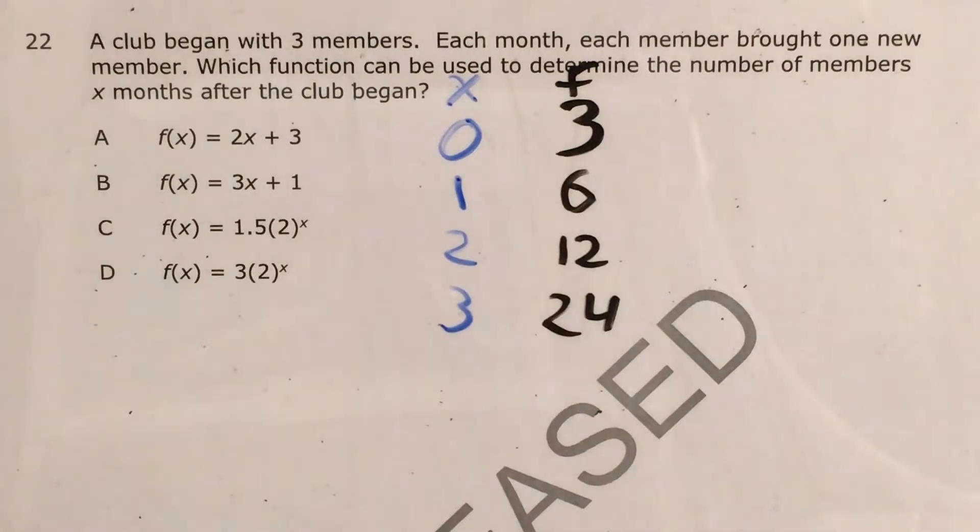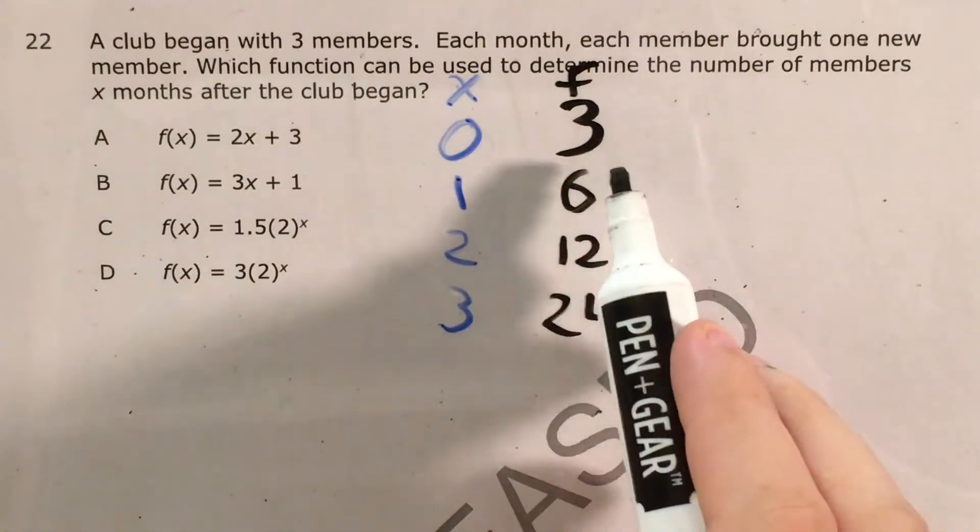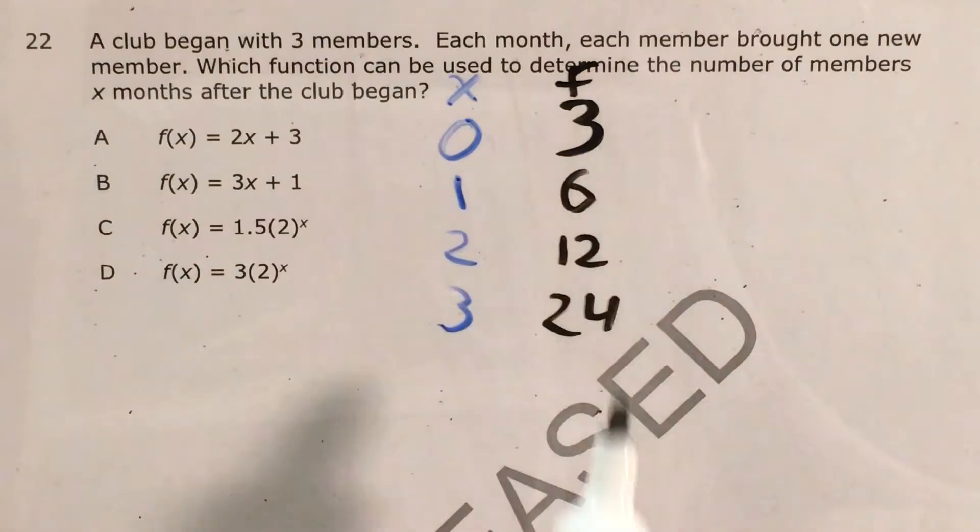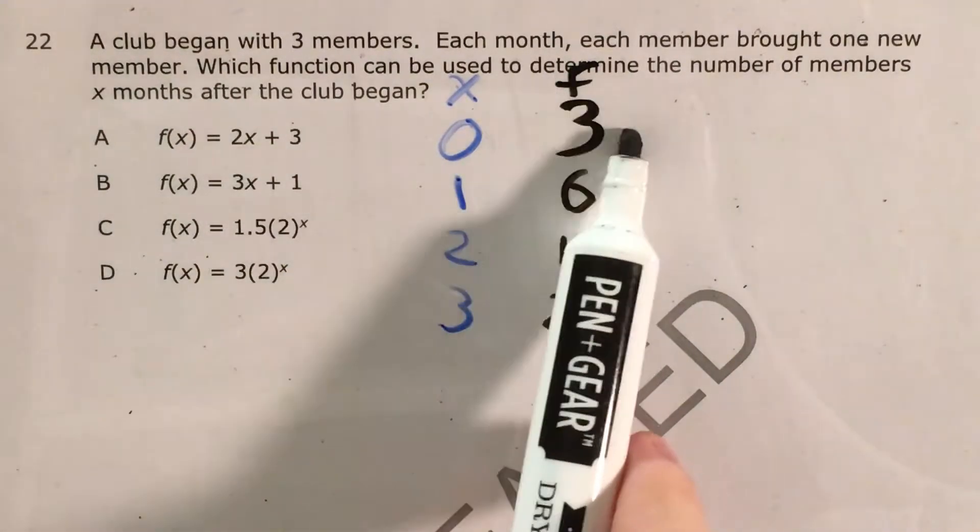So I think this is a good set of x and y values to go along with for right now. First thing I want to do is confirm what might be some of your suspicions at this point. Because if you know about linear functions, you know that we're not multiplying the same thing every time to get from one value of f to the next. We're adding the same thing.